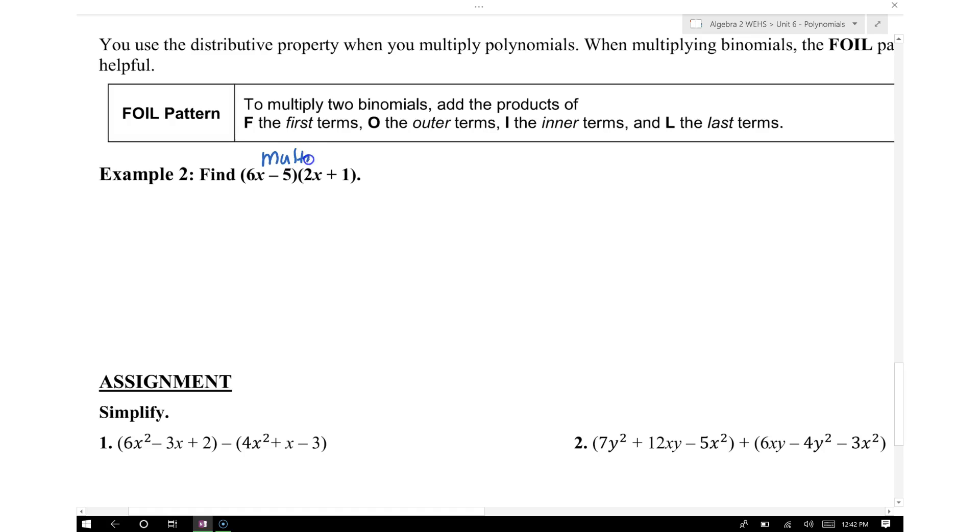What we're doing here is multiplying binomials. The reason why they're called binomials is because they have two terms in each expression. I'm going to rewrite it here on the side. We have 6x minus 5, that's our first binomial, and our second binomial is 2x plus 1.